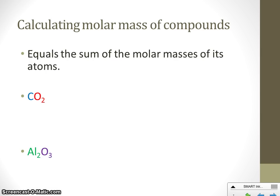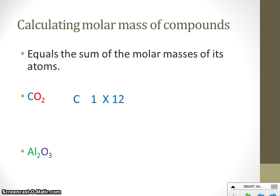Not everything we find is a single element — a lot of times we put elements together to form compounds or molecules. To find the molar mass of a compound, you just add up the molar masses of each part. In a CO₂ molecule, we have carbon and oxygen. There is one carbon atom — no subscript means one — and each carbon atom weighs 12 grams, so carbon contributes 12 grams. Oxygen has a subscript of two, and each oxygen atom has a molar mass of 16, so two times 16 means oxygen contributes 32 grams.